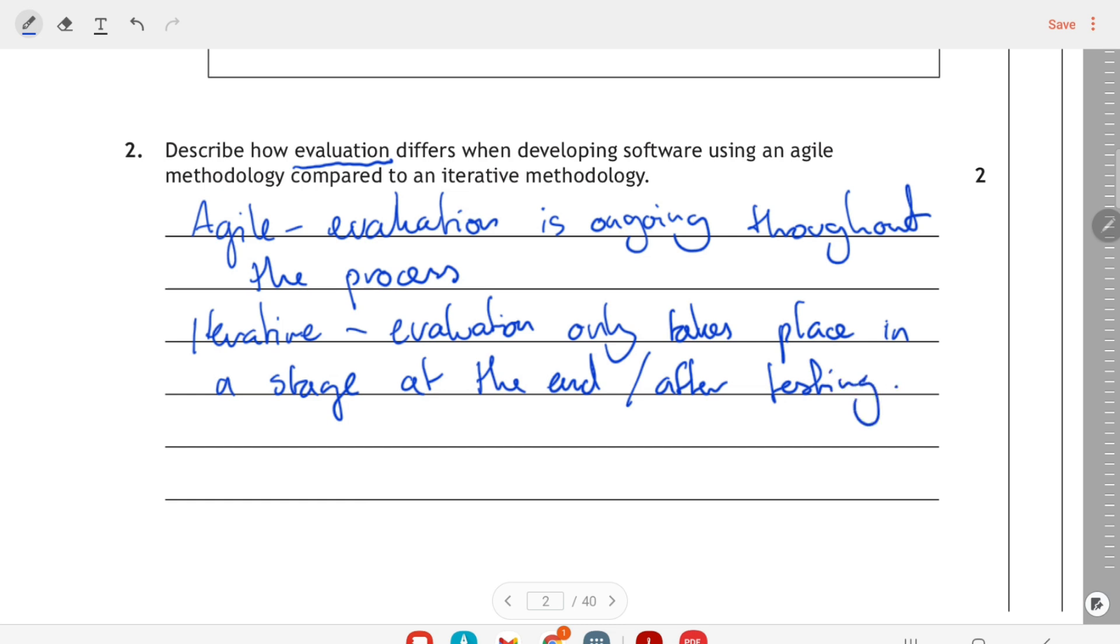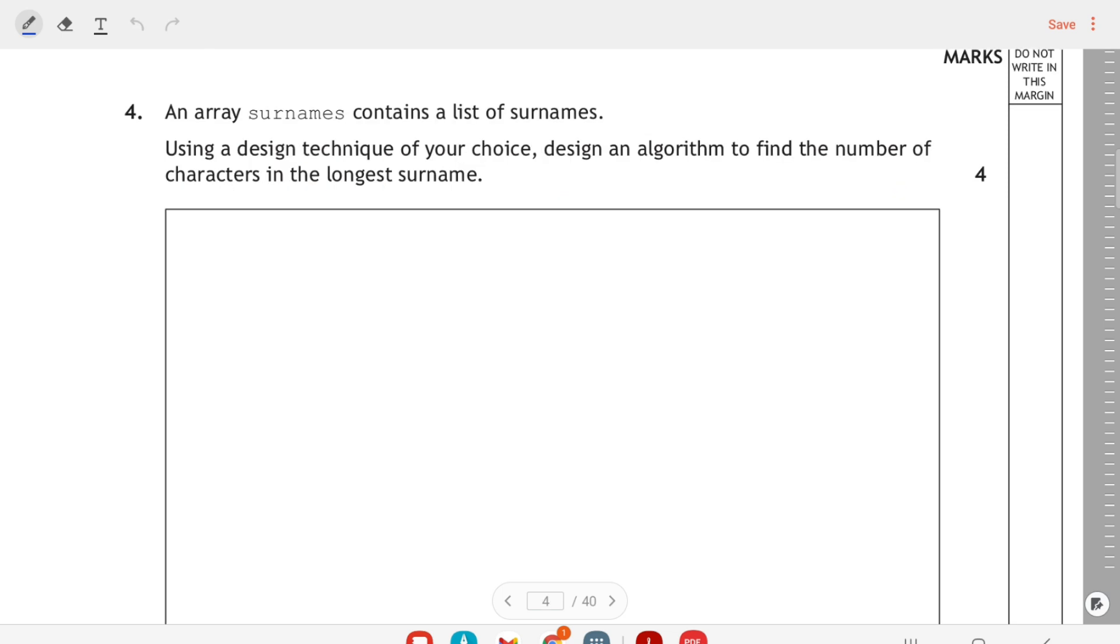So that's actually quite an easy thing for two marks, and you might not have seen it as two separate points that you're making there, but it is. So you're saying what it's like in agile and what it's like in iterative. So then we've got a four mark standard algorithm question. We've got an array called surnames and it contains a list of surnames, so it's going to be an array of strings.